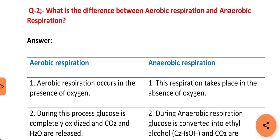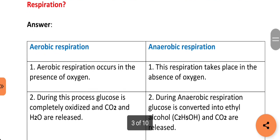Our next question is: what is the difference between aerobic respiration and anaerobic respiration? Aerobic respiration occurs in the presence of oxygen, whereas anaerobic respiration takes place in the absence of oxygen. During aerobic respiration, glucose is completely oxidized and carbon dioxide and water are released. Whereas during anaerobic respiration, glucose is converted into ethyl alcohol and carbon dioxide.